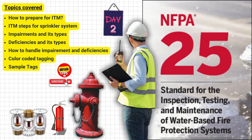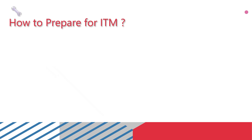Welcome back. Today we are going to cover these topics: number one, how to prepare for ITM; ITM steps for sprinkler system impairments and deficiencies; types of impairments and deficiencies; how to handle these impairments and deficiencies as per NFPA 25; color-coded tagging; and we will also look at some sample tags.